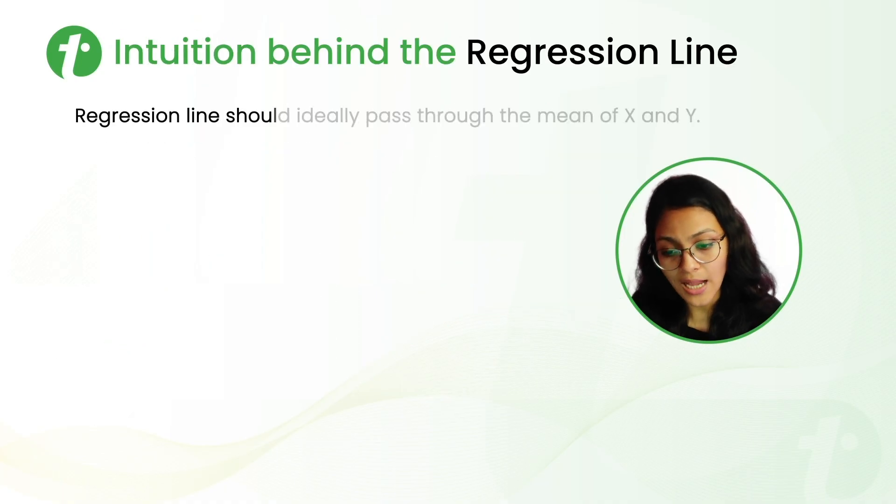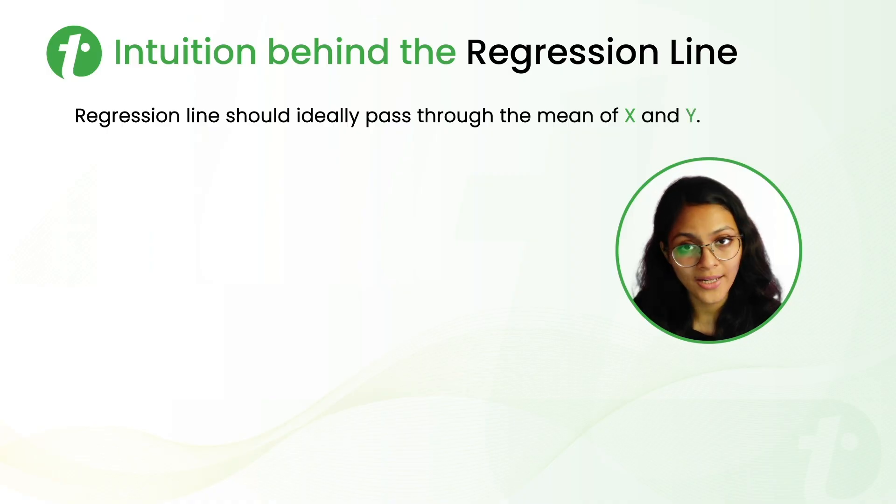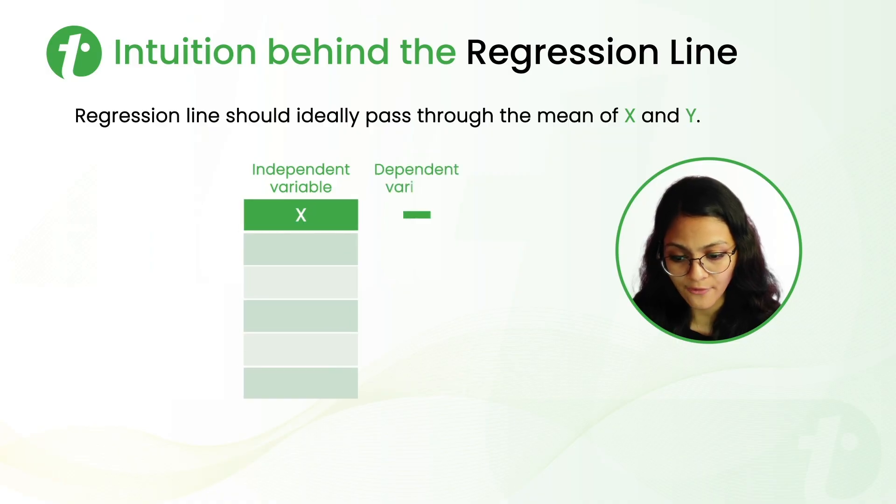Regression line should ideally pass through the mean of X and Y. For this example, let's consider this small data set where X is the independent variable and Y is the dependent variable.